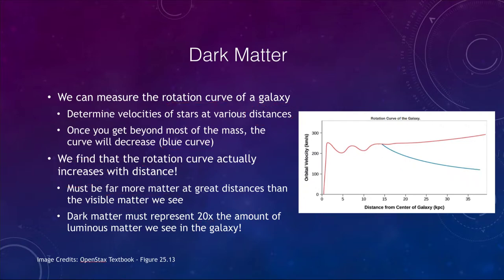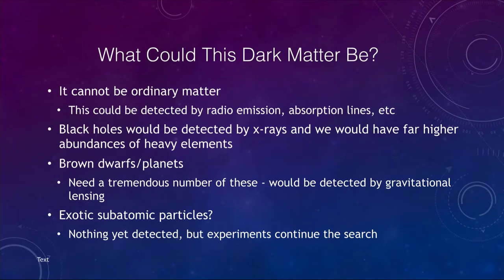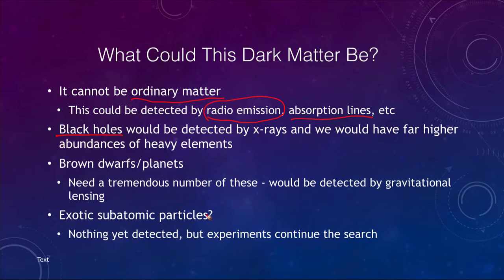What could this dark matter be? First, we know it could not be ordinary matter — it could not be atoms, dust, and gas because we would detect it. We could detect gases by radio emissions, or detect absorption lines from starlight traveling through them. Could it be black holes? Black holes would be hard to see, however if black holes collect matter they give off x-rays which we could find. And if there were that many black holes, calculations show we would have far higher abundances of heavy elements — anything heavier than hydrogen or helium — which we do not have.